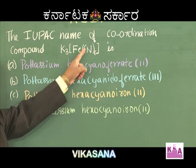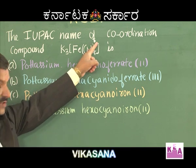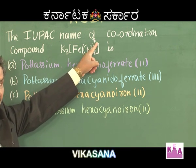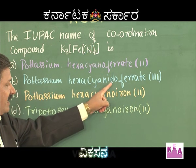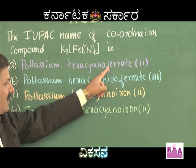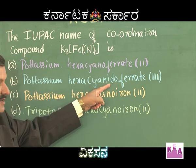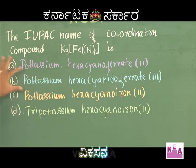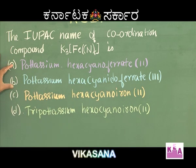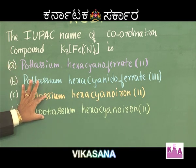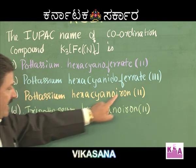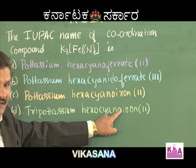Based on the '-ate' ending, look at the options. 'Ferrate' appears in two of the options — these are the two remaining candidates. The other two options which are named as 'iron' are ruled out.